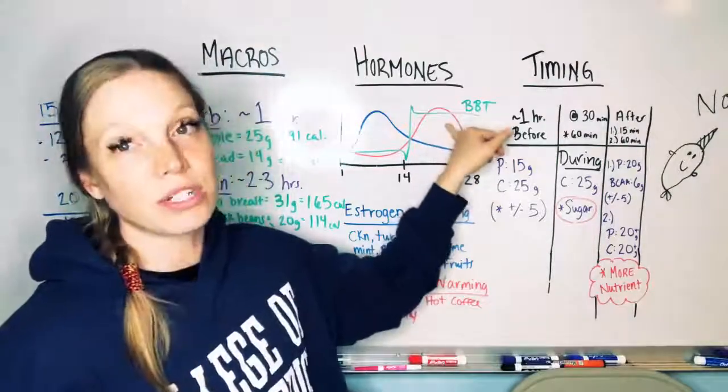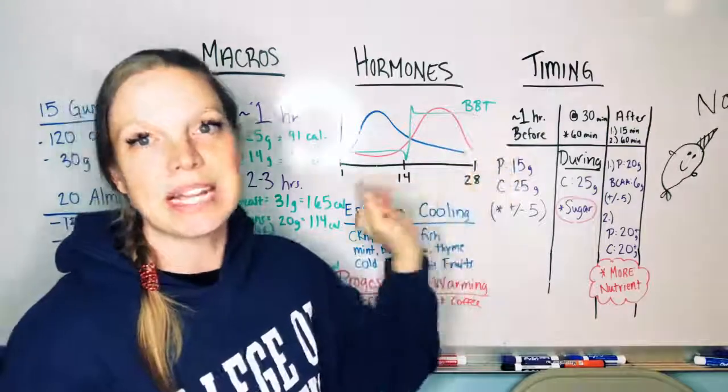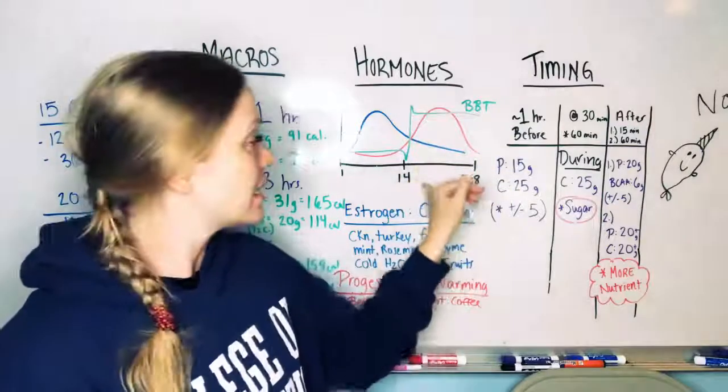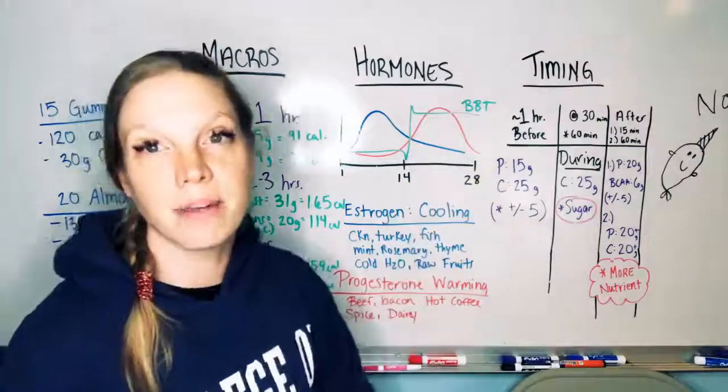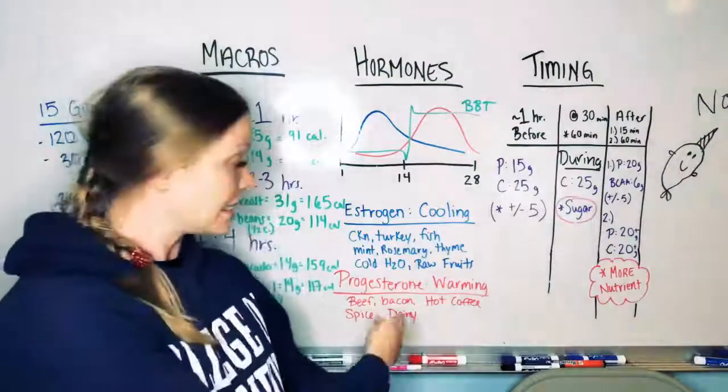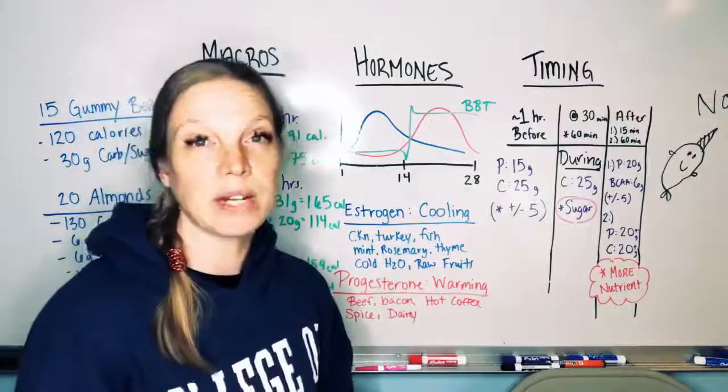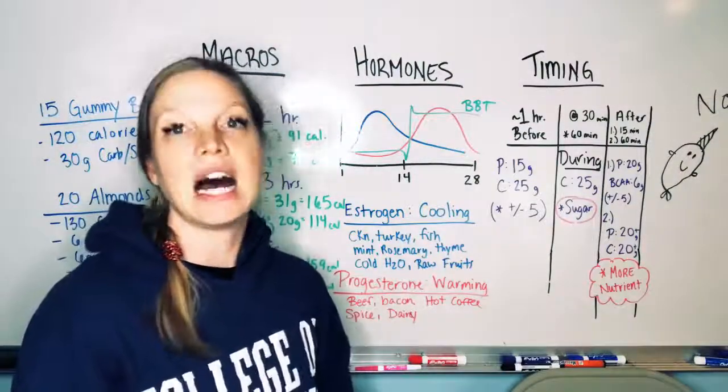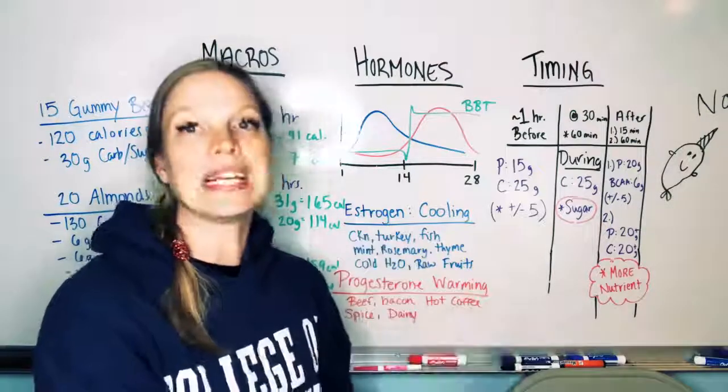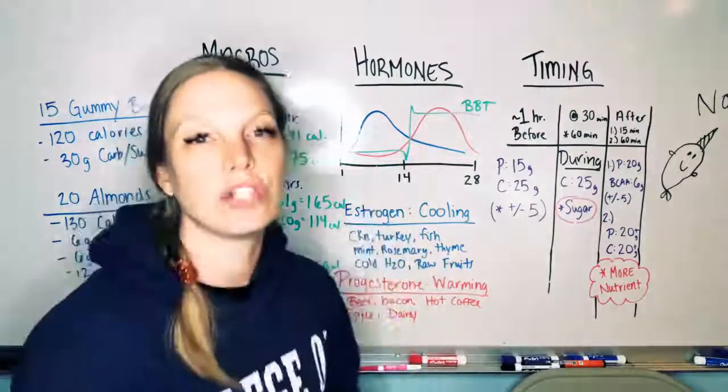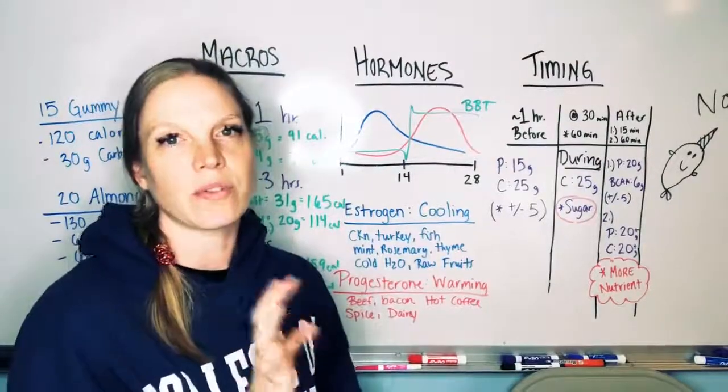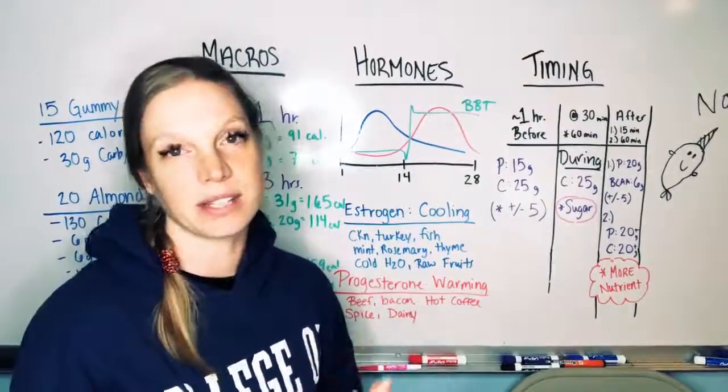Now, after you ovulate, your basal body temperature does rise. And progesterone is the dominant hormone then, in this second phase of the month. And this is a warming phase. So what does that mean if it's a warming phase? You're going to want to eat more warming foods to lean into progesterone.